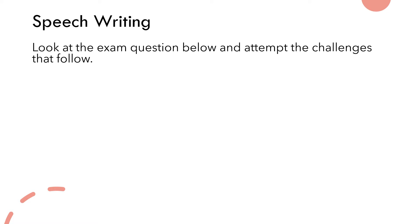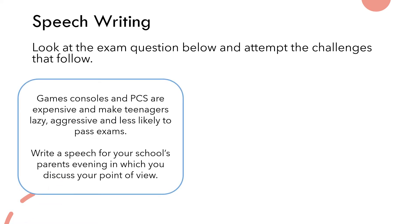Look at the exam question below and attempt the challenges that follow. The question is: 'Games consoles and PCs are expensive and make teenagers lazy, aggressive and less likely to pass exams. Write a speech for your school's parents' evening in which you discuss your point of view.' The vast majority of you doing Functional Skills may not be within a school setting — you may be in a college setting — but a lot of questions are aimed at teenagers, so that's a key thing to be aware of.